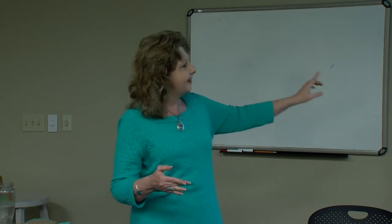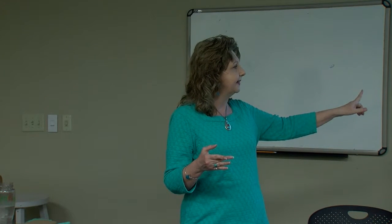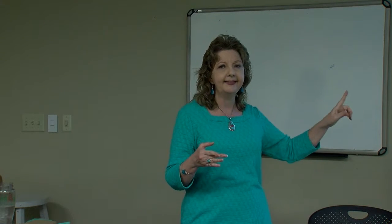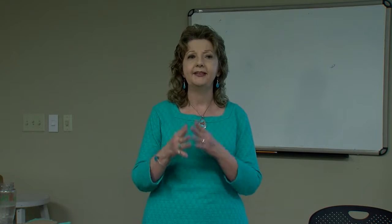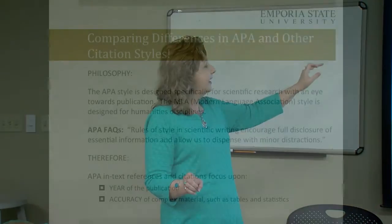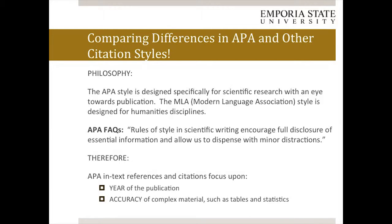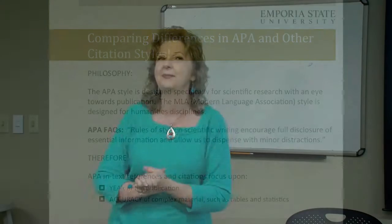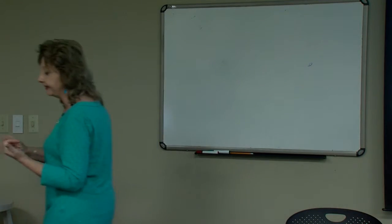We still include page numbers for pages of articles or book chapters, but the focus is very much upon the year. APA also focuses on the accuracy of complex materials such as tables and statistics. The American Psychological Association states that the rules of style in scientific writing encourage full disclosure of essential information and allow us to dispense with minor distractions. That's directly from the APA site — that's why APA style looks the way that it does.